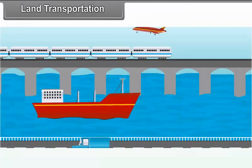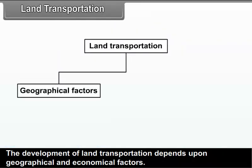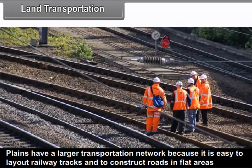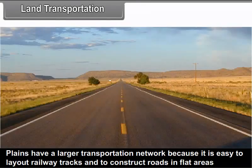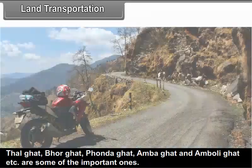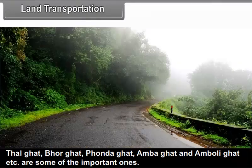Land transportation development depends upon geographical and economical factors. Topography is one such factor — plains have a larger transportation network because it is easy to lay out railway tracks and construct roads in flat areas, whereas it is difficult in hilly areas. For example, the Kokan region is connected to the plateau region only through a few ghats: Talghat, Borghat, Fondaghat, Ambaghat, and Ambolighat.